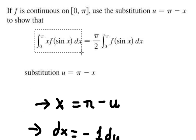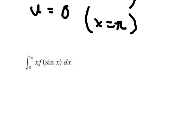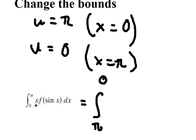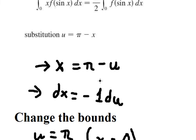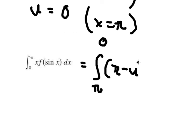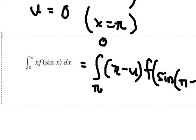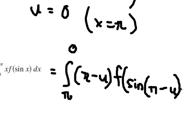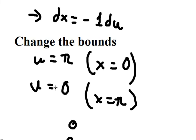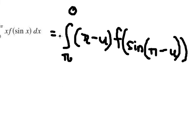And now we have this integration. Number zero we change by π, and number π here we change by zero. So x we change by π minus u. x in here we change to f of sin of π minus u. And the next one, dx we change by negative du, so we put negative sign here.